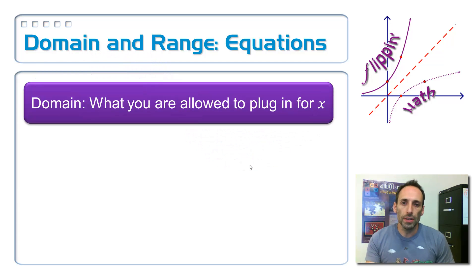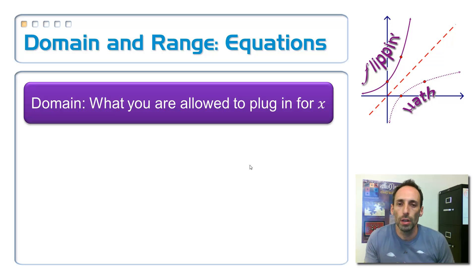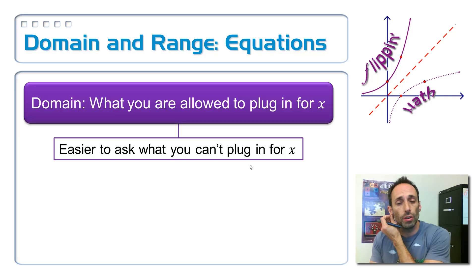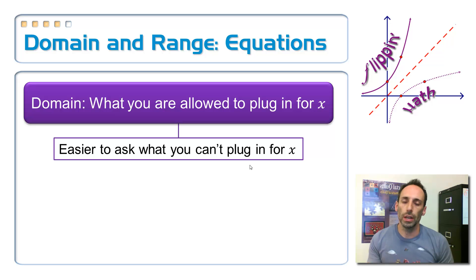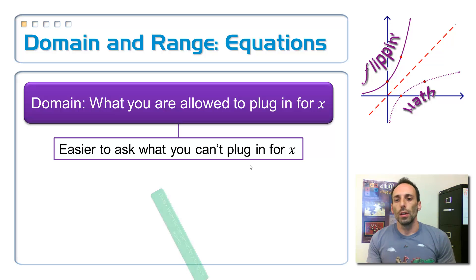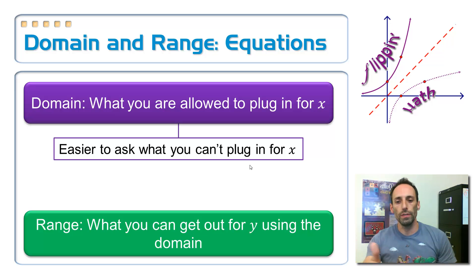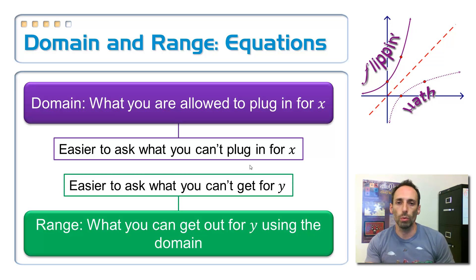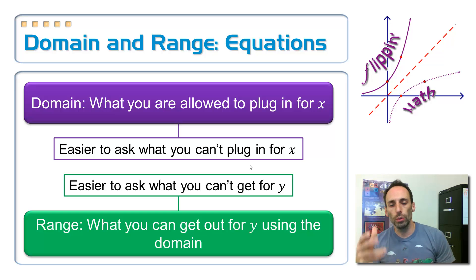The domain is just asking you: what am I allowed to stick into the equation? Do I get to stick anything I want in for x? Sometimes it's an easier question to answer by asking: what can I not stick into it? If I have a square root, it's easier to think that the value inside can't be negative. For the range, I'm looking for all possible y values — what y values can you get from your original domain? Again, it's sometimes easier to ask: what can I not get for y? What is impossible to get for y? Asking it from another point of view is often easier.